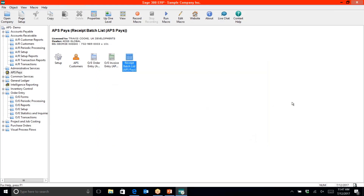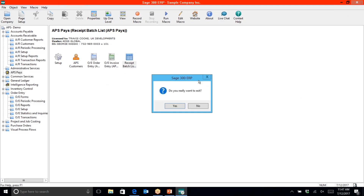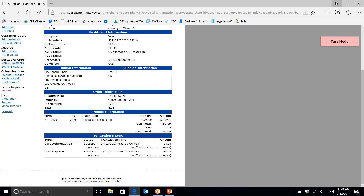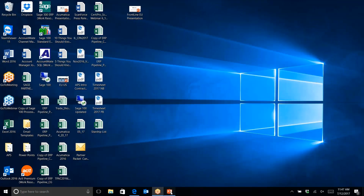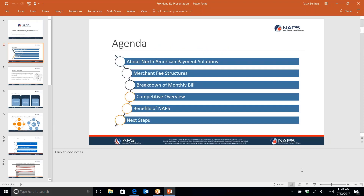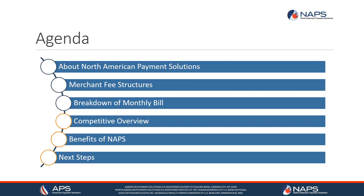That completes the Sage 300 demo. I'm going to continue now with our PowerPoint presentation so we can talk about the other features and benefits North American Payment Solutions has to offer. We are one of the top credit card processing companies within the United States and Canada, servicing thousands of merchants nationwide.